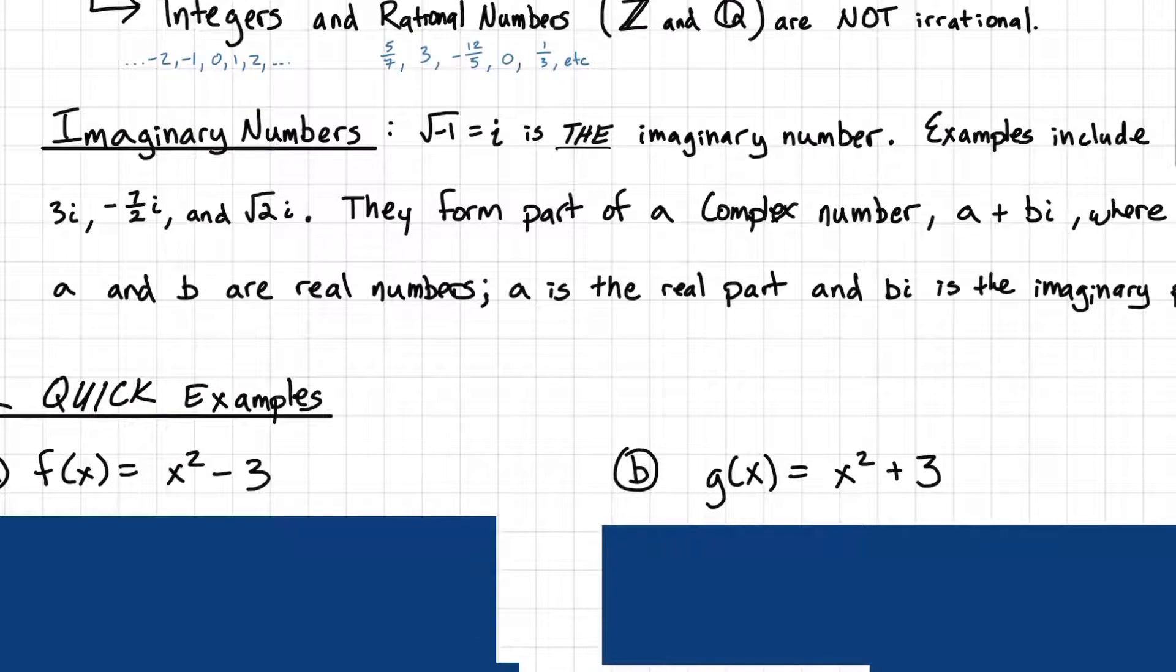Next, we can talk about imaginary numbers. The square root of negative 1, which is i, that is the imaginary number. So if someone references the imaginary number, it is this. But all imaginary numbers are all those numbers that basically sort of kind of have this stuck on it. So examples would be like 3i, or negative 7 halves i, or square root of 2i.